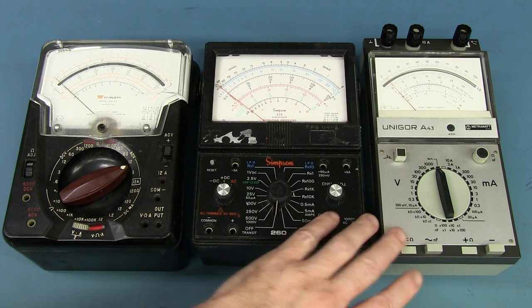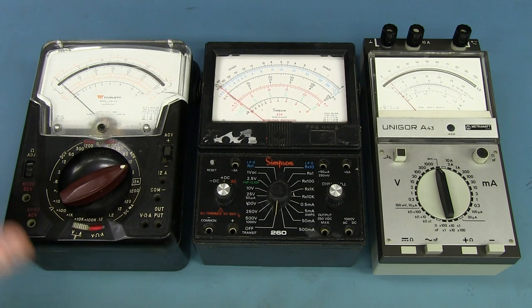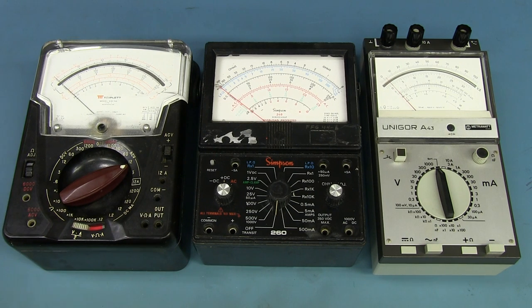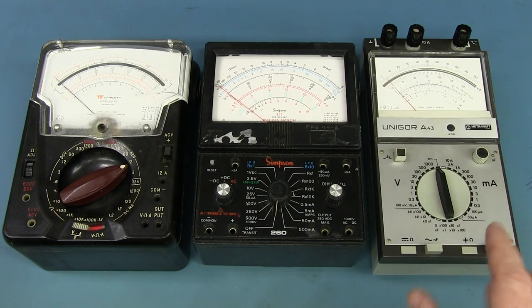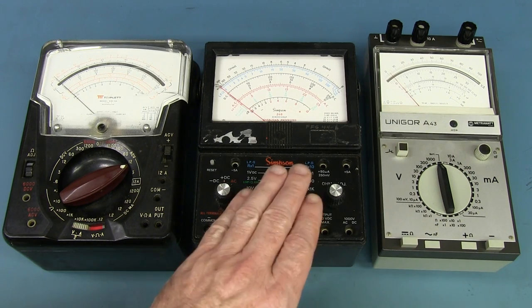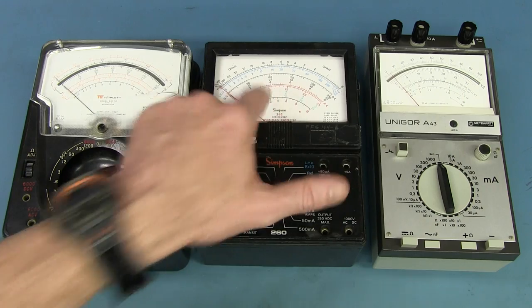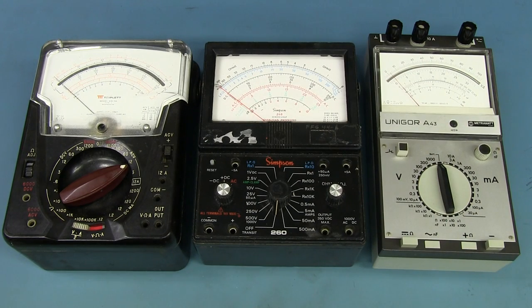If you had to ask me feature wise, out of these meters, which one would I have? I'd have to say my Triplet 630 NA because it's got more ranges with that range doubling switch, unique high voltage input, the output function. It is just a nicer meter overall, much more useful. I really wouldn't pick the Simpson because not only is it the least accurate, but it also doesn't have a mirrored back like these two to eliminate parallax error when you look down on the needle. If you look down at an angle, you can easily read the wrong value. That was everything on these analog multimeters. That's a fail right there on the Simpson 260.